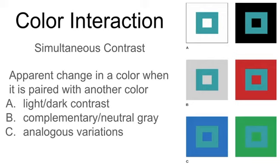The third principle of simultaneous contrast is analogous variations. The turquoise square in the center of this blue square has somewhat of a green tone to it, but when placed on a green background, this same turquoise square starts to look blue.